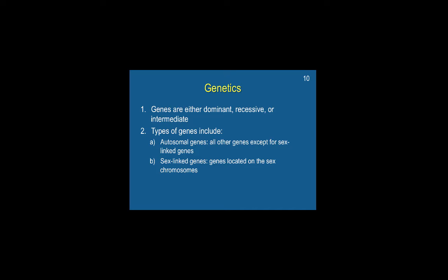We're going to be talking about genetics more later on. Genes can be either dominant, recessive, or intermediate — somewhere in between. There are two types of genes: autosomal genes, which are all genes except for sex-linked genes, and sex-linked genes, which are specifically located on the sex chromosomes.